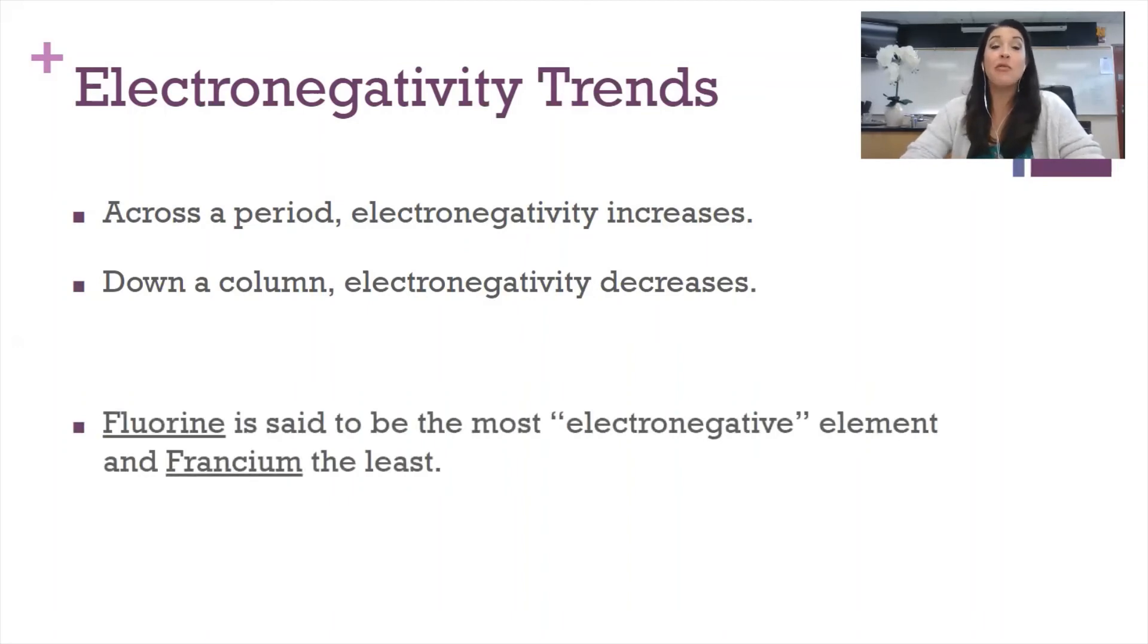Let's see how you did. Fluorine is considered the most electronegative element. It's a smaller element. Its outermost electrons are very much attracted to its nucleus, but it is one away from a full octet, so it's going to want to attract new electrons to itself when it's sharing a bond with another element. Francium, on the other hand, the furthest down and furthest left on the periodic table, is said to be the least electronegative element.